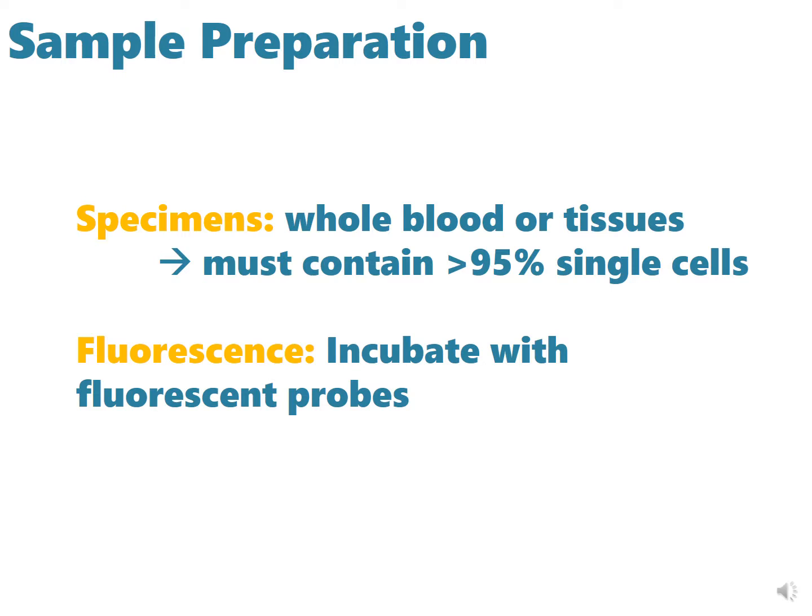In order to perform flow cytometry, there must be an appropriate sample. This sample must be made up of single cells and not attached to one another, so that individual cellular analysis can be performed. In the case where the sample is a tissue, this must be disrupted into individual cells. Furthermore, incubation with fluorescent probes can be used to identify cells with certain markers or characteristics.